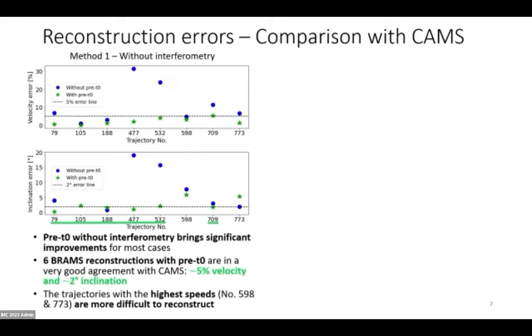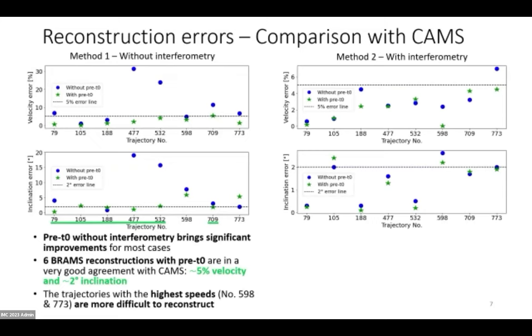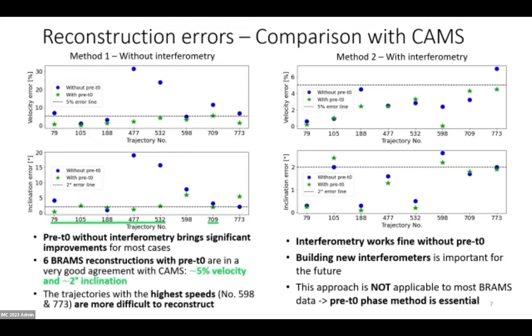With interferometry now, with method two, the story is very different because, as we expect, interferometry works already fine without pre-zero phase. That pushes us, as Hervé already told us about, to build new interferometers for the future. But as I said, this is not applicable to most BRAMS data, and this is why this pre-zero phase method is actually essential to obtain good trajectory reconstructions for most cases.